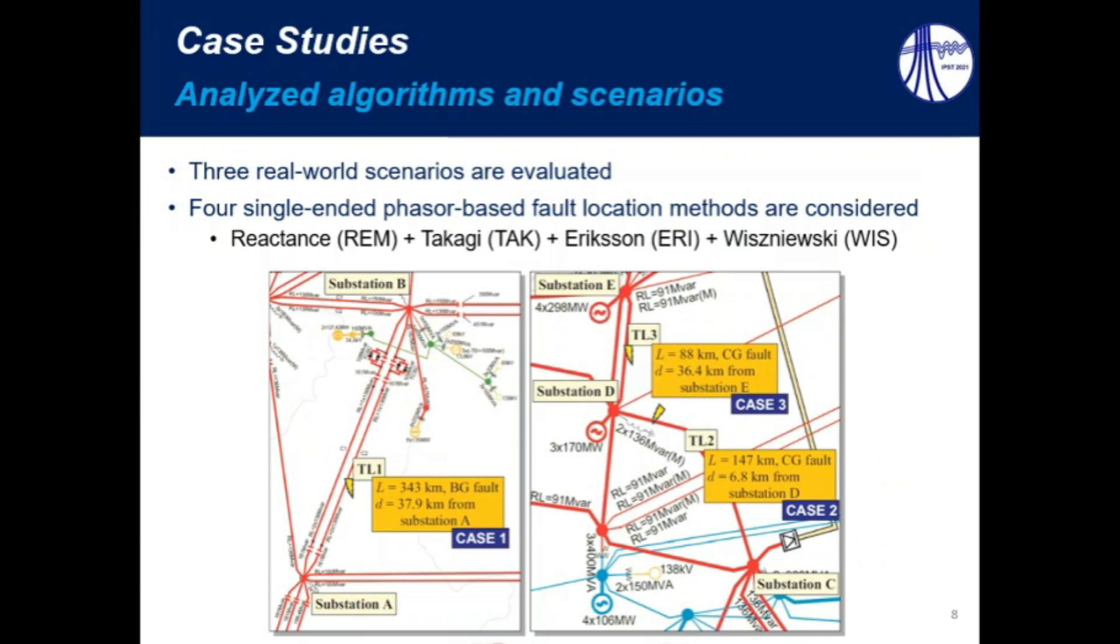The case one consists of a B-G fault that took place on a double-circuit series compensated line. The case two regards a C-G fault that took place within a single-circuit line, where at one terminal we have here an HVDC link connected. And the case three is a C-G fault that took place on a double-circuit line interconnecting here substations E and D. And as you will see in the next slides, it is a case of high-resistance fault.